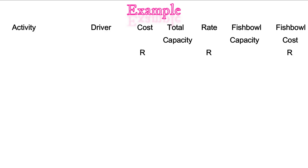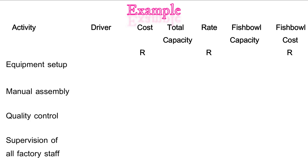I've provided you with the layout, so take a moment to write that down — remember we're just doing it for Fishbowl. The next step is to put in our activities: equipment setup, manual assembly, quality control and supervision of all factory staff. Then we put in our cost drivers: number of setups, number of hours, number of inspections and number of employees.